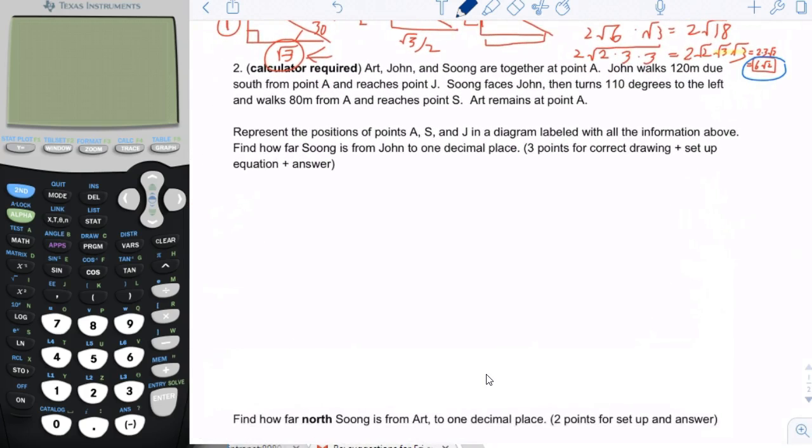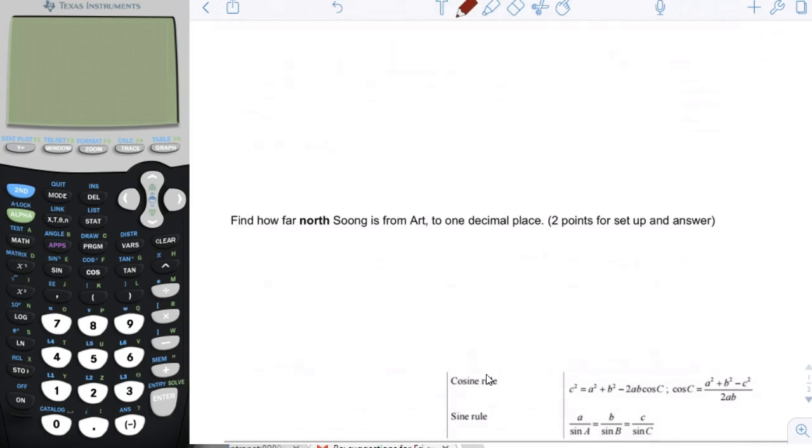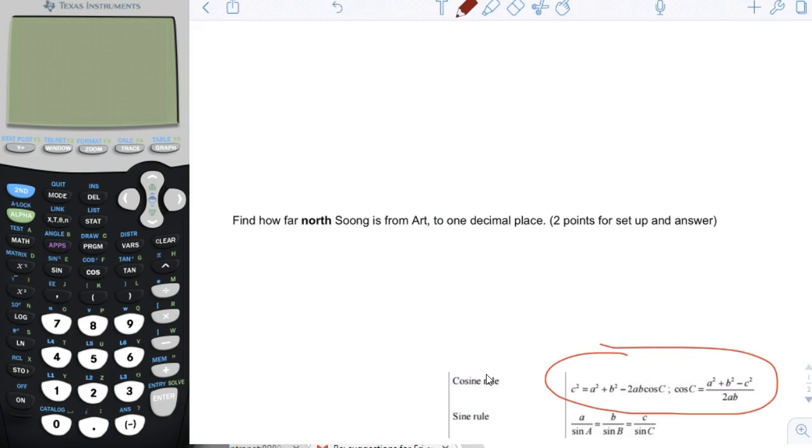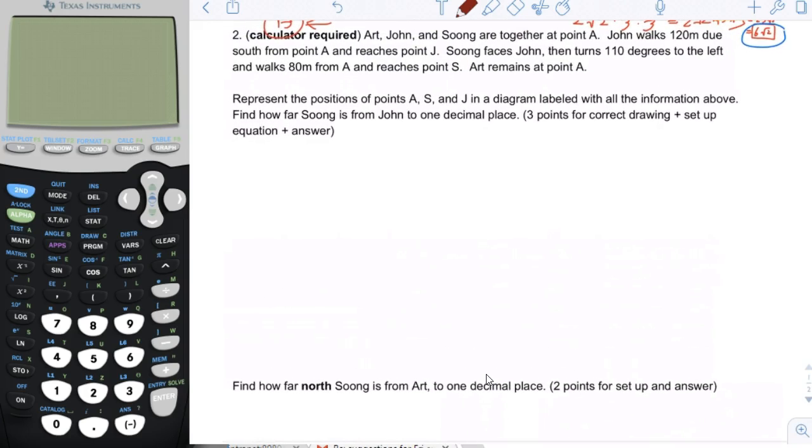Next problem in which you are going to use the calculator. It's a law of cosines problem. The formulas for the law of cosines are provided right here. Represent the positions of points A, S, and J in the diagram. Art, John, and Soong are together at point A. John walks 120 meters due south from point A. So you start with point A, everybody's at point A. And then John is going to walk 120 meters south.